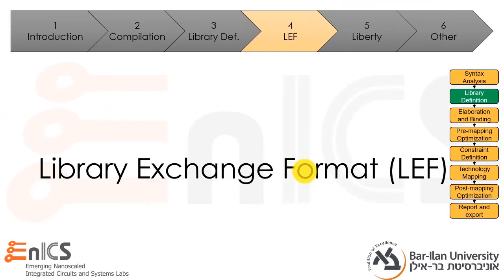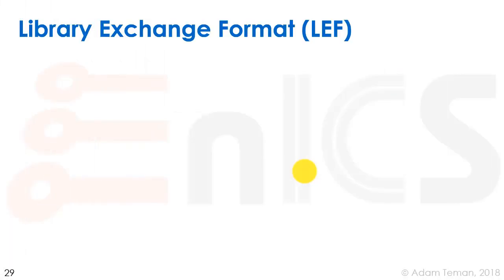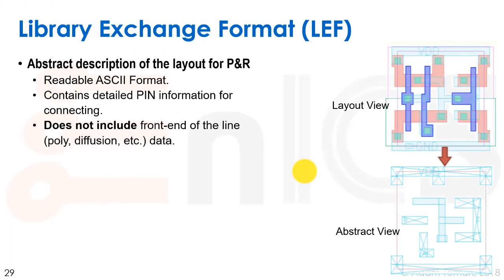Now we'll start discussing two of these types of files that we mentioned before. The first one is LEF, or Library Exchange Format. A LEF is an abstract definition of the layout for place and route. It comes in a readable ASCII format. It contains detailed pin information for connecting, and it does not include front-of-the-line, poly diffusion, et cetera data.